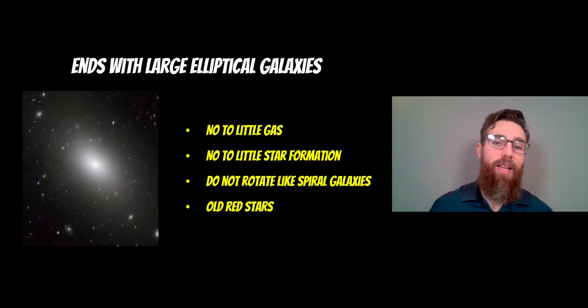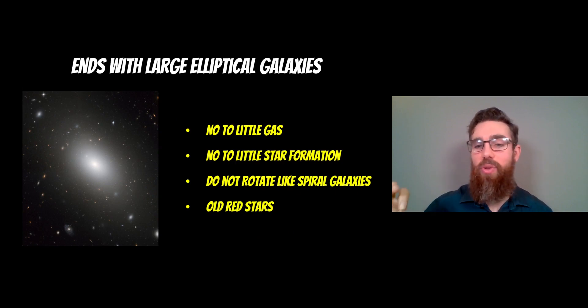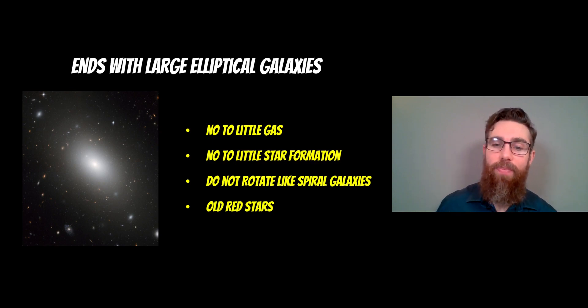And so you end up with these elliptical galaxies. Some differences between these large elliptical galaxies that are formed compared to the spiral galaxies is they don't have any gas in them. The gas has been depleted. The stars are formed from it, so there's little to no gas left.